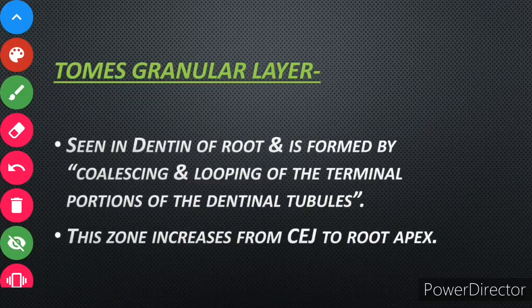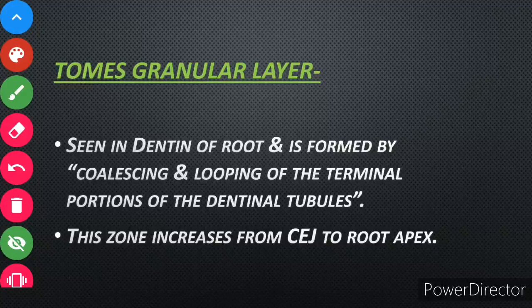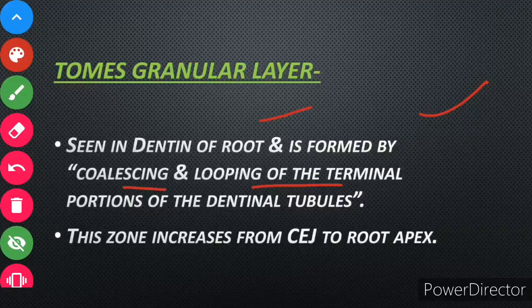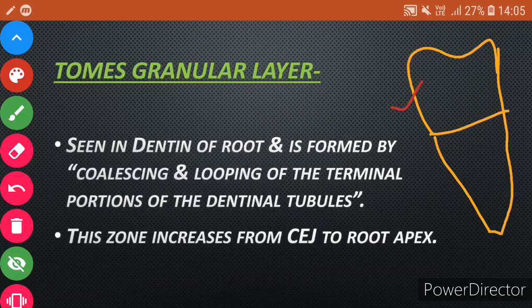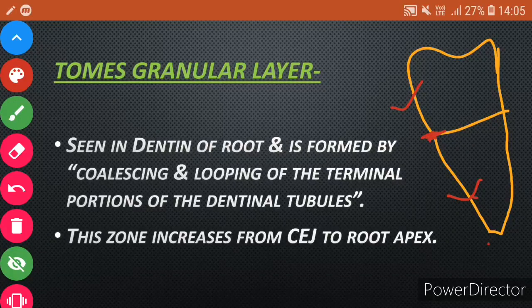Now, Tomes' granular layer. This is a key point. It is seen in the dentinal root and is formed by the coiling and looping of the terminal portions of the dentinal tubules. In the diagram, enamel, cementum, and the CEJ are shown, and this area is increased from the root apex.